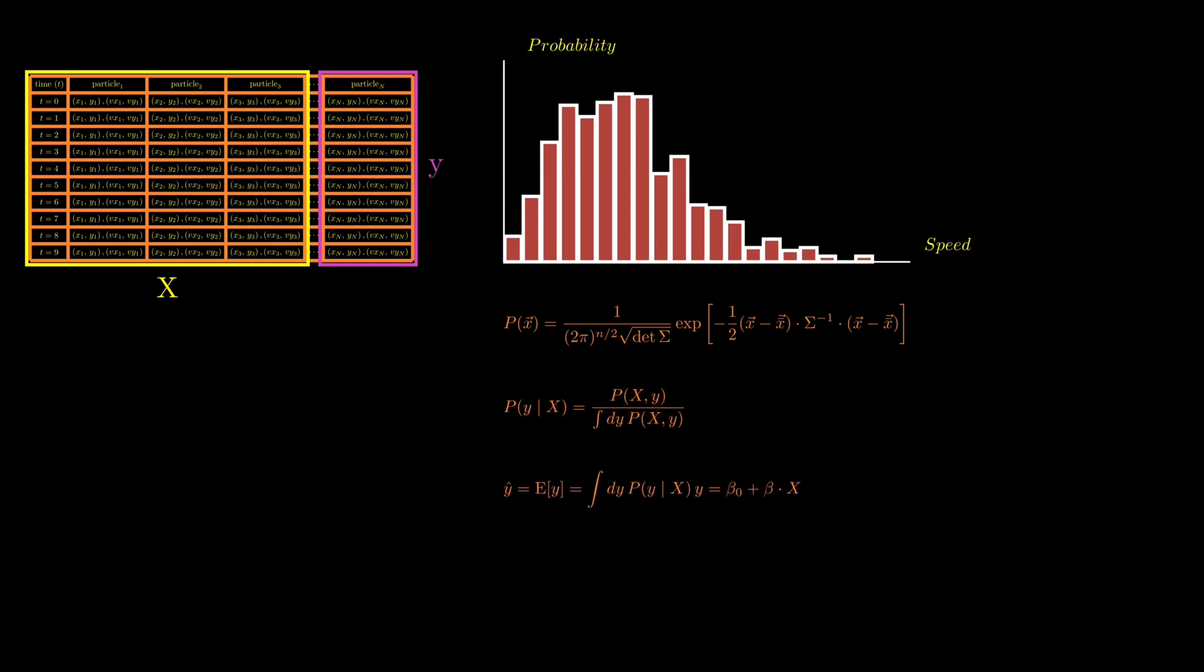From this, we compute the expected value of Y, which becomes our prediction, denoted by Y-hat. That means we average all possible values of Y weighted by their probability, and this gives us a linear expression. An intercept term, beta-naught, plus a weighted sum of the features X, with weights given by beta. This final expression is just the equation for linear regression.